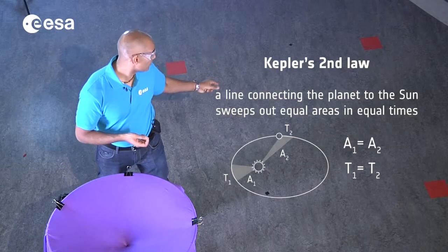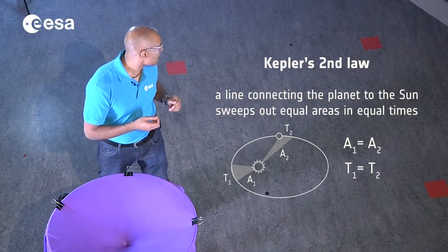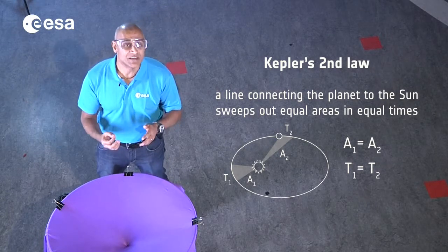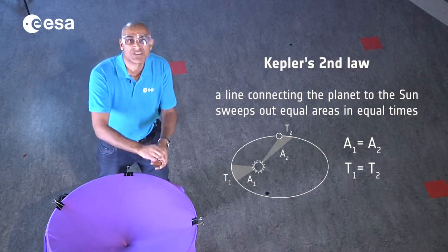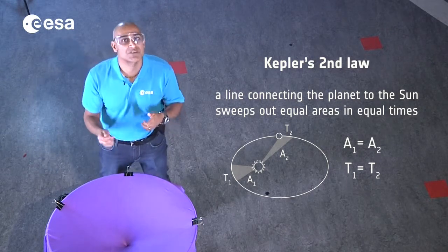His second law: equal areas are swept out in equal times. This is why for a comet, as it approaches the Sun, its velocity goes up dramatically. As it recedes from the Sun to the furthest point of its orbit, its velocity decreases.